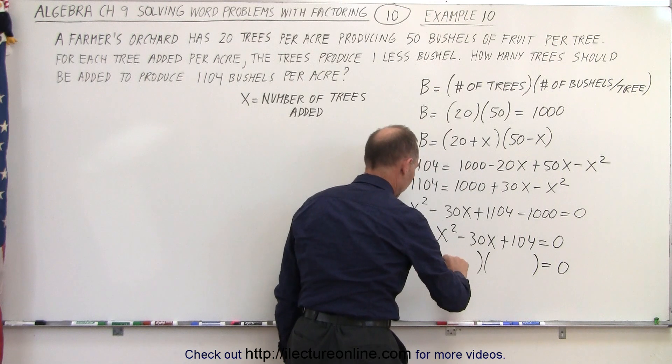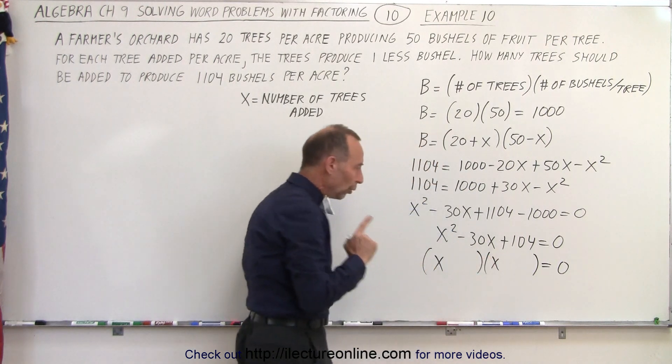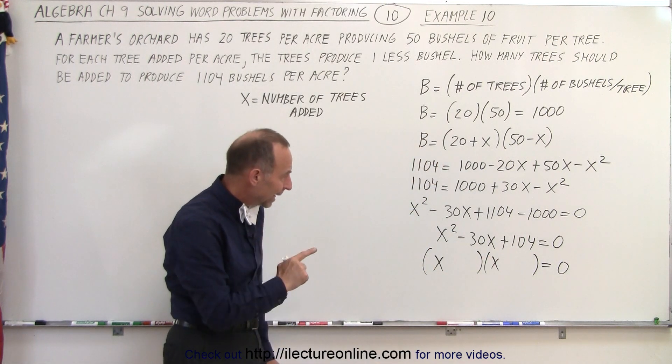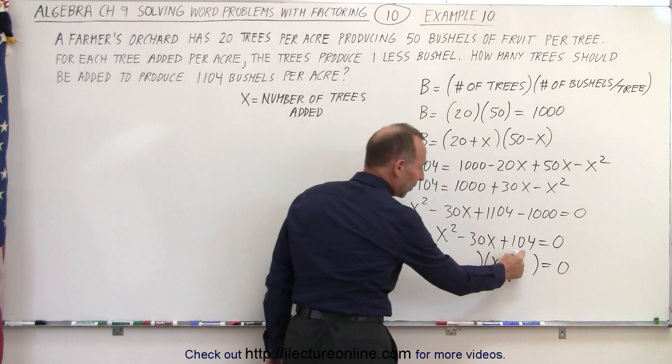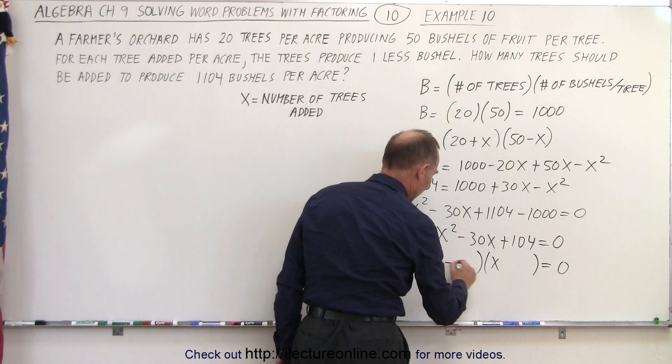We're going to need an x and an x. Both numbers are going to need to be negative because when we multiply, we get a positive. When we add them, we get negative. So we have a negative and a negative.